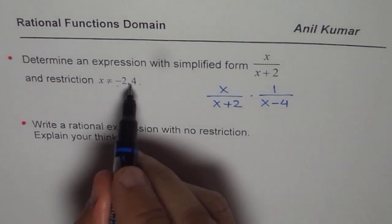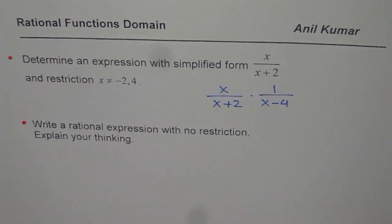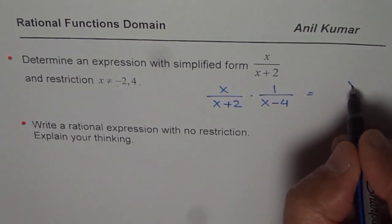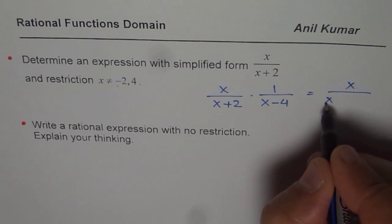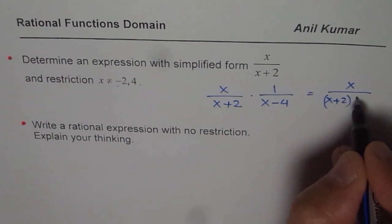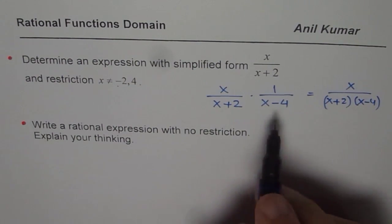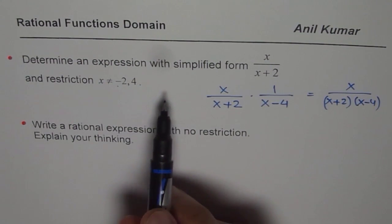In that case, we will satisfy the second restriction also. So, the expression could be x over x plus 2 times x minus 4. You get the idea. That is how you can write down the expression.